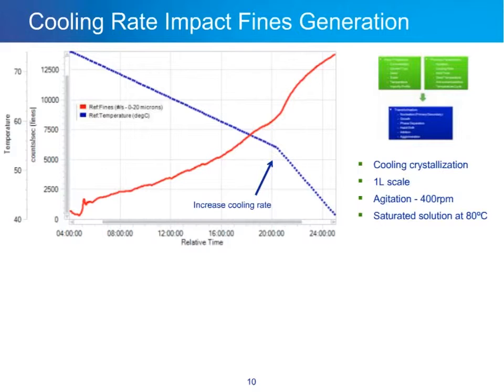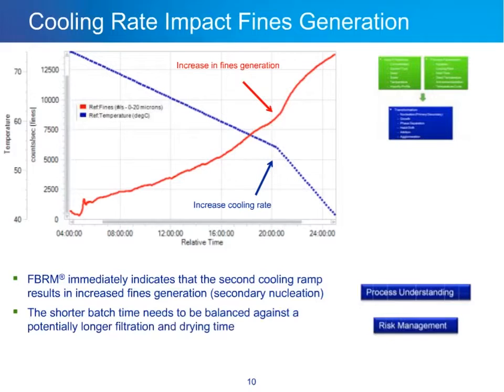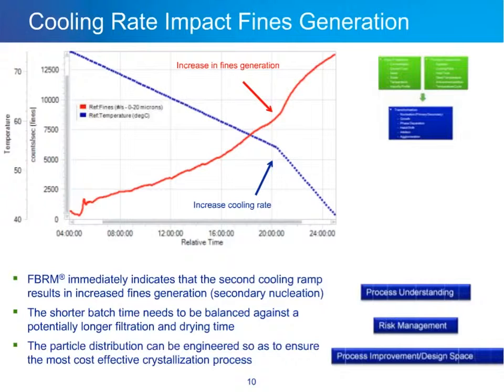An increase in the cooling rate results in increased fines generation. FBRM immediately indicates that the second cooling ramp results in increased fines generation — this is process understanding. The shorter batch time achieved by cooling faster for the final four hours needs to be balanced against a potentially longer filtration and drying time. The particle distribution can be engineered to ensure the most effective crystallization process by changing the cooling rate to generate the appropriate particle distribution for the best filtration and batch time.